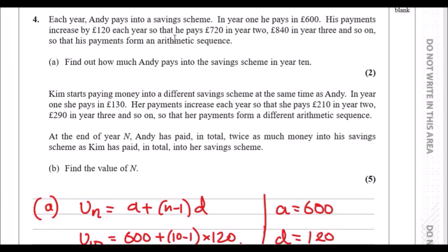So each year, Andy pays into a savings scheme. In year one, he pays in £600 and his payments increased by £120 each year. So he pays £720 in the second year, £840 in the third year, and so on. So these payments form an arithmetic sequence. Before we even solve this question, let's label A and D. We can say firstly, A is the first term, which is £600, and the common difference D is plus £120. So this is your first term and your common difference.